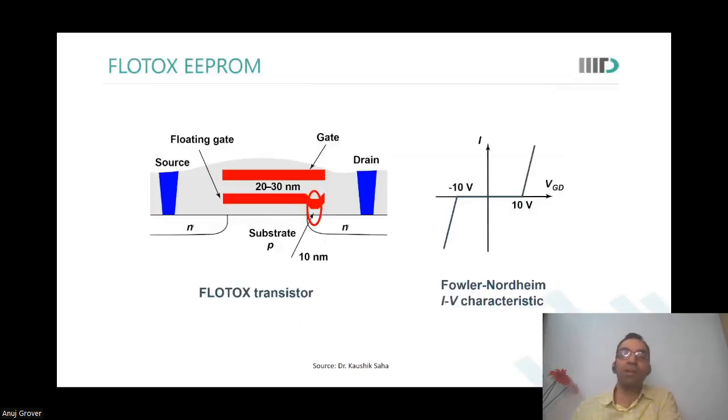This could be by atomic layer deposition or by a specific gate oxide edge or something like that. Look at it over here. So this is called as FLOTOX EEPROM - floating gate oxide EEPROM - and you've created this 10 nanometer width region over here.